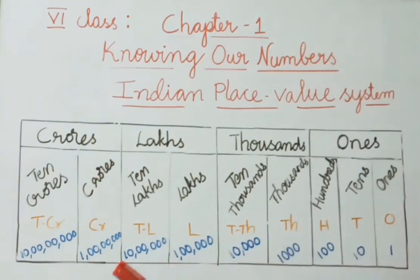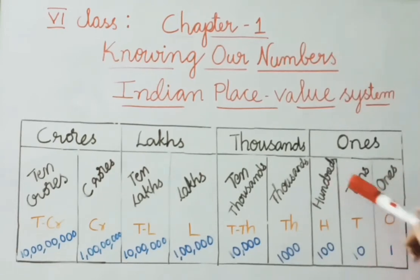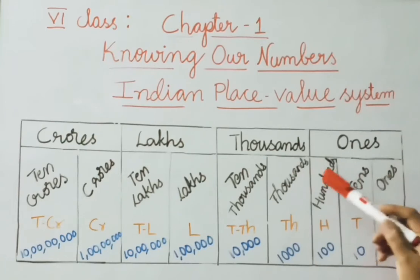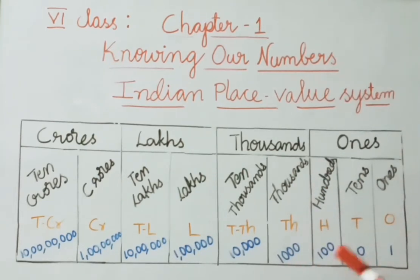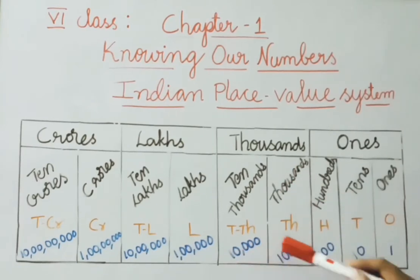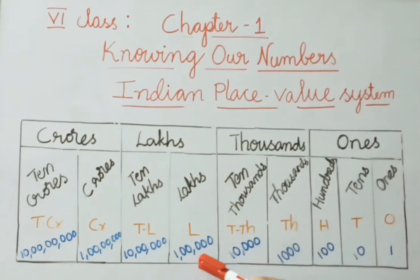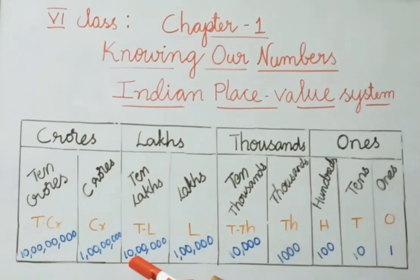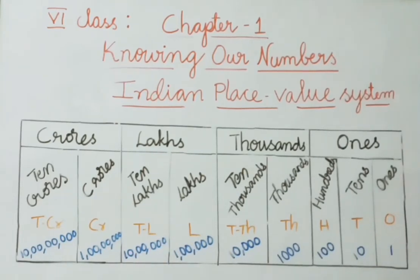Now let us see the numbers. 1s is 1, 10s is 10, 100s is 100, 1000s is 1000, 10,000 has 1 followed by 4 zeros, 1 lakh has 1 followed by 5 zeros, 10 lakhs has 1 followed by 6 zeros, 1 crore has 1 followed by 7 zeros, and 10 crores has 1 followed by 8 zeros.